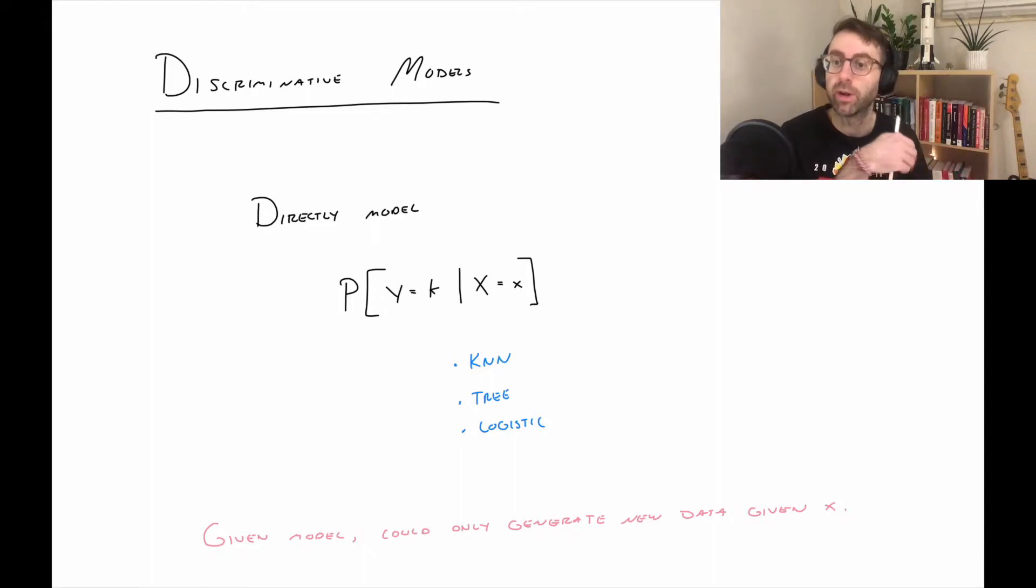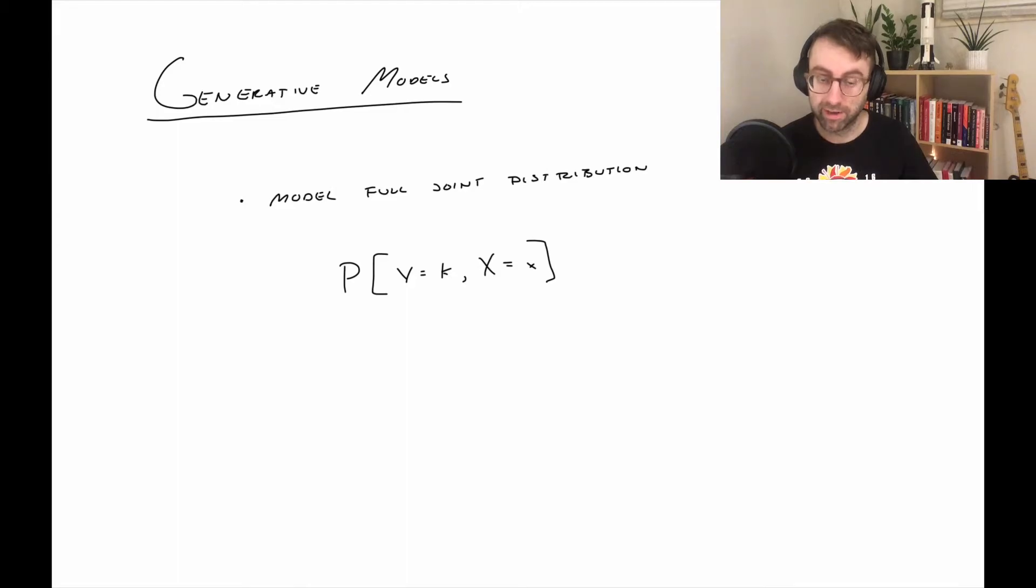because then if I give you the X value, you know the distribution of Y, you could generate a new Y. But if I just said to you, hey, I want a whole new row of data, including the Y and the Xs, the feature variables with these models, you just couldn't do it.